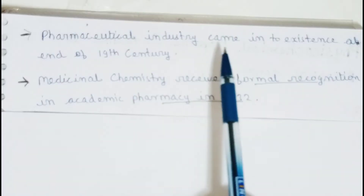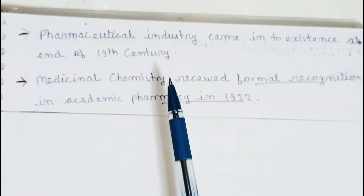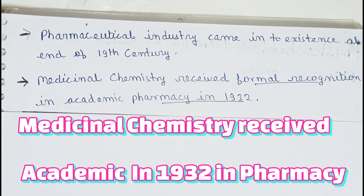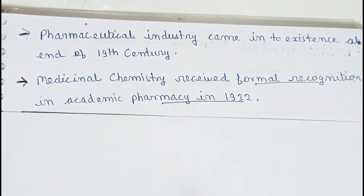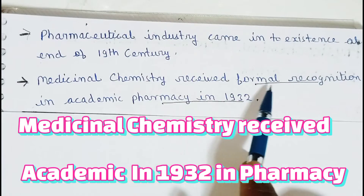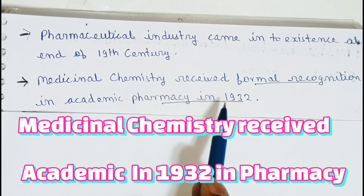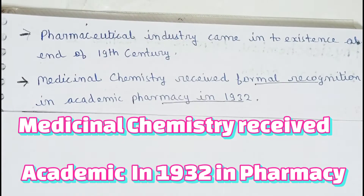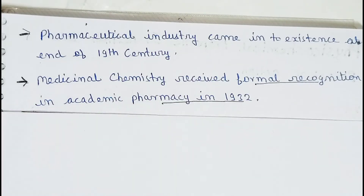Pharmaceutical industry came into existence at the end of the 19th century. जितनी भी pharmaceutical industries open होनी शुरू हुईं, वो 19th century के अंत तक शुरू हो गई थीं। Medicinal chemistry received formal recognition in academic pharmacy in 1932.